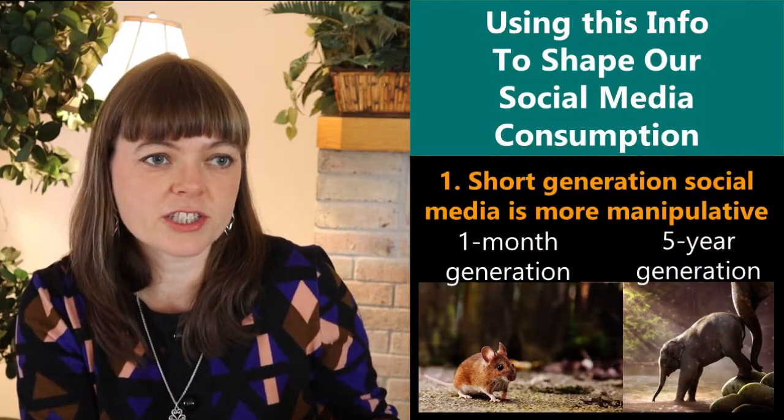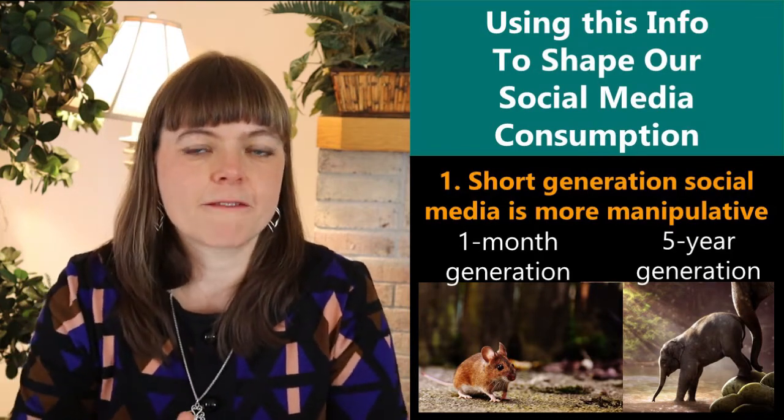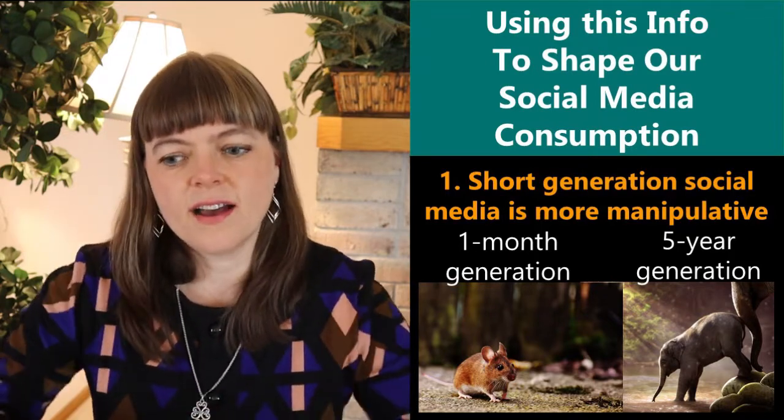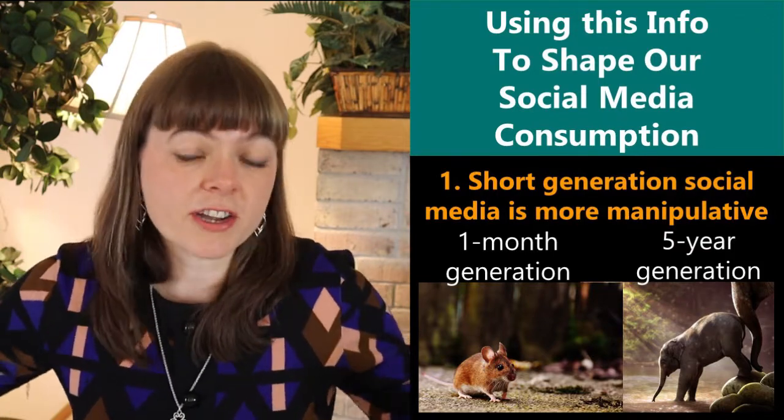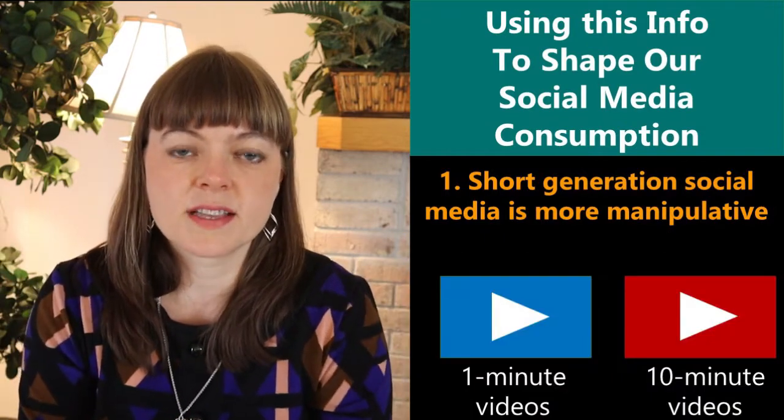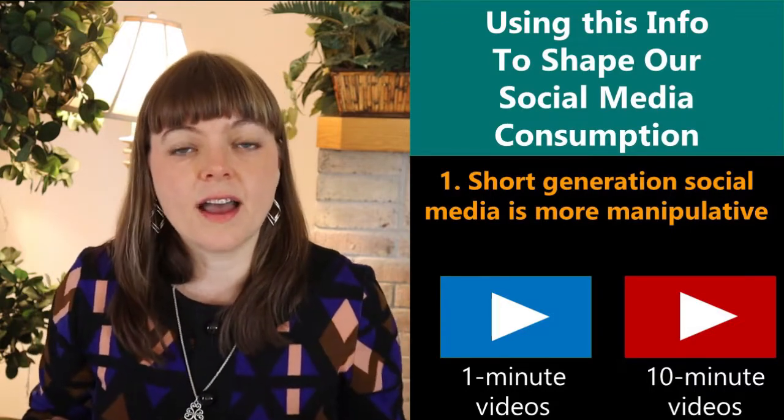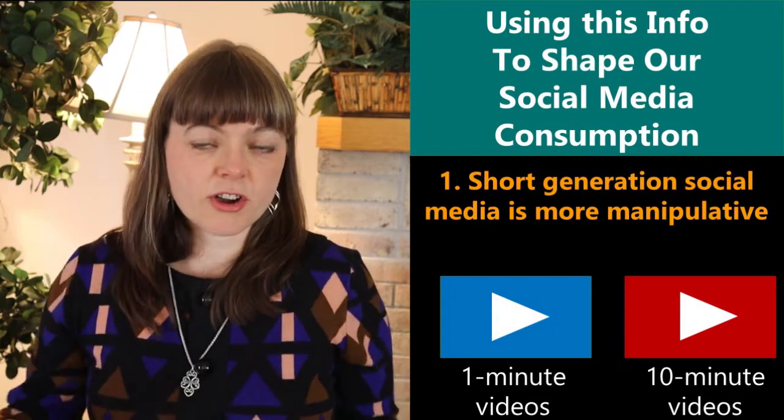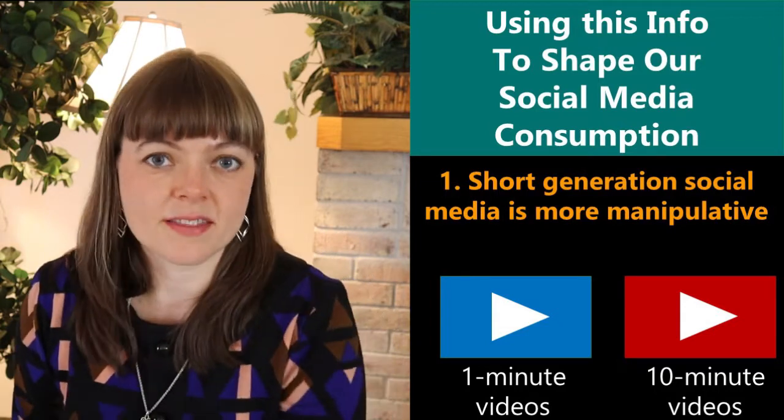Like if we have a two week generation, like the gerbils have new babies every two weeks, versus a five year generation where some animal like an elephant or something only has offspring every five years, the pace of evolution is very different for those. And so the same is true of social media algorithms. If your generation happens fresh every every 10 minutes versus every one minute, then the evolutionary process is going to evolve 10 times as quickly in the one environment than the other.